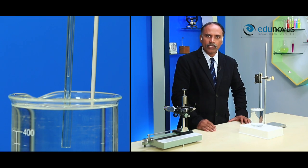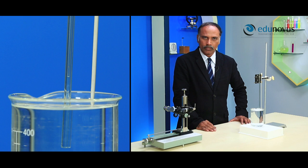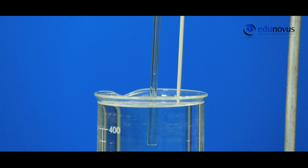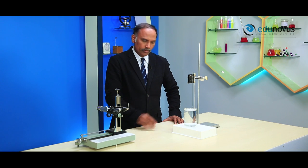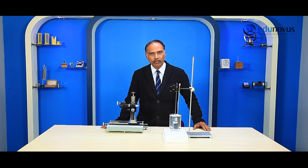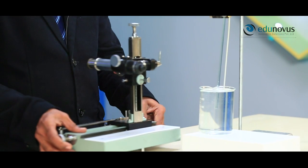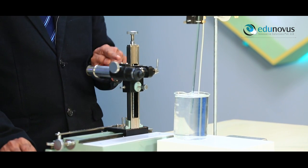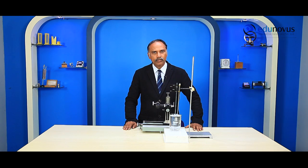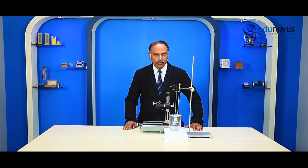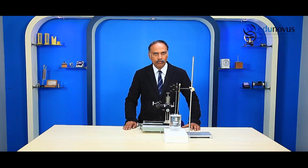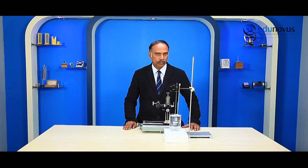The rise of water in the capillary tube is due to the surface tension of water. We measure the height of water using the traveling microscope. Each main scale division is 0.5 mm, and 49 main scale divisions equal 50 vernier scale divisions, giving a least count of 0.001 centimeter.